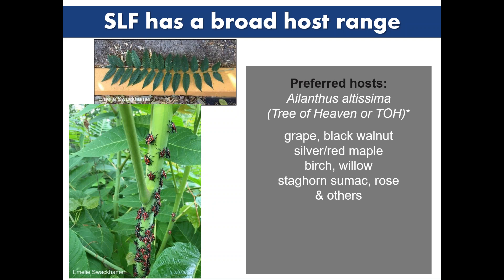Other preferred hosts include grape, black walnut, silver and red maple, birch, willow, staghorn sumac, and rose. Especially in the nymph stage, rose is almost an indicator plant — we often find Spotted Lanternfly there first. It also loves Asian ornamental trees like Phellodendron (armor cork tree). One bit of good news: we have not recorded substantial feeding on any conifers. They may sit on a conifer occasionally, but don't really feed on pines, spruce, or other conifers.